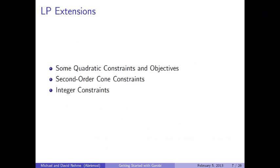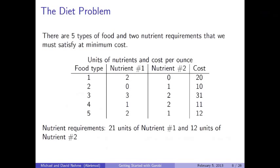Let's formulate a small instance of the diet problem and solve it using Gurobi through the Python interactive shell. The diet problem is one of determining how much of various food types to consume in order to satisfy nutrient requirements at minimum cost. We're given a set of foods and nutrients, the cost per ounce of each of five foods, and lower limits on the amount of each nutrient we need to consume. For simplicity, this instance considers only lower bounds on nutrients.